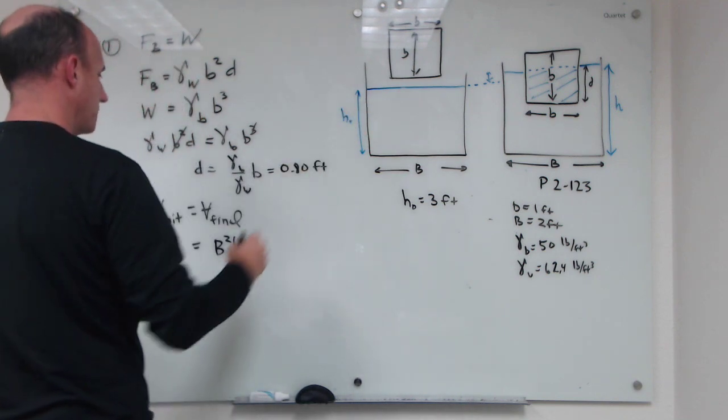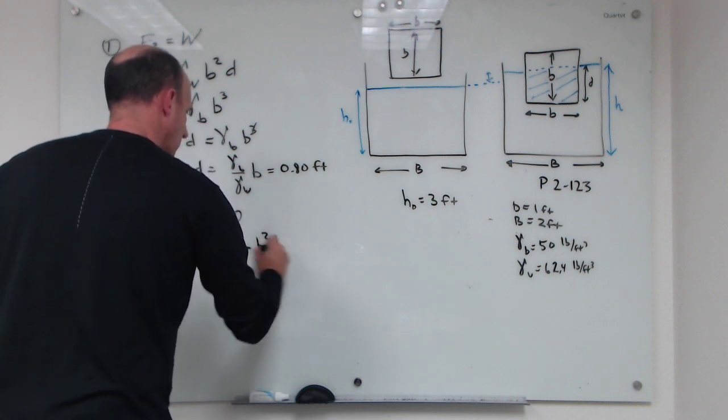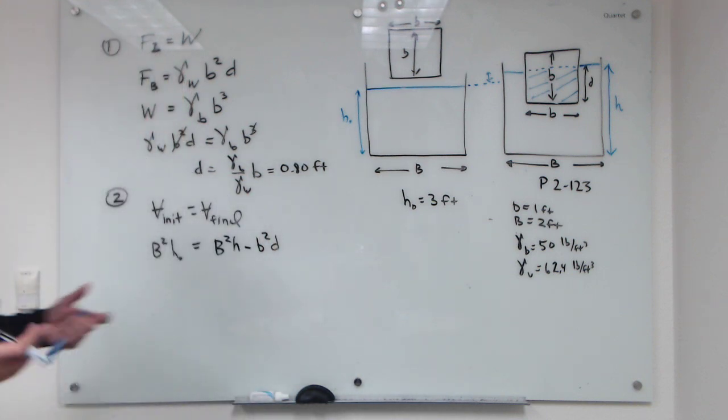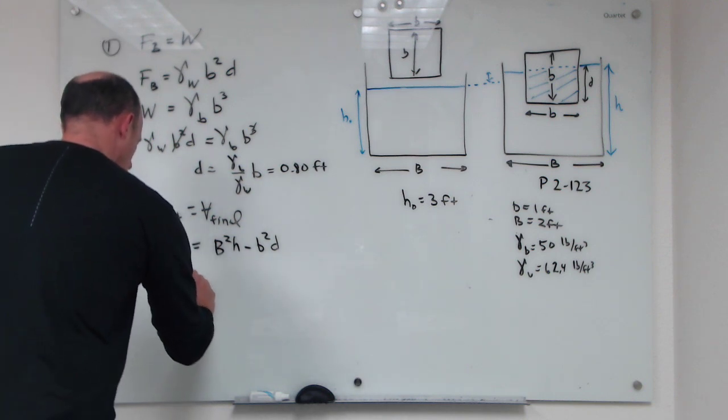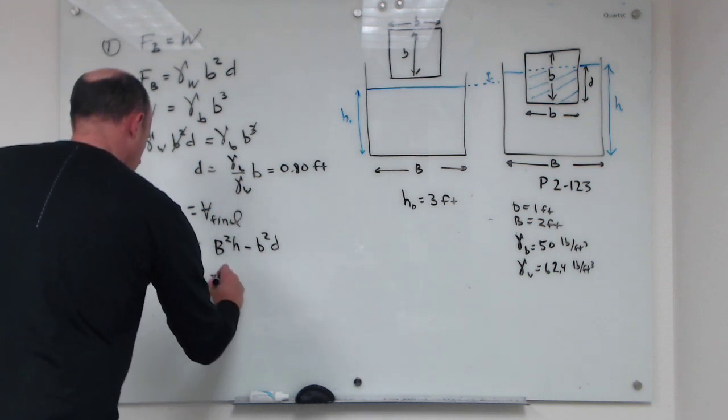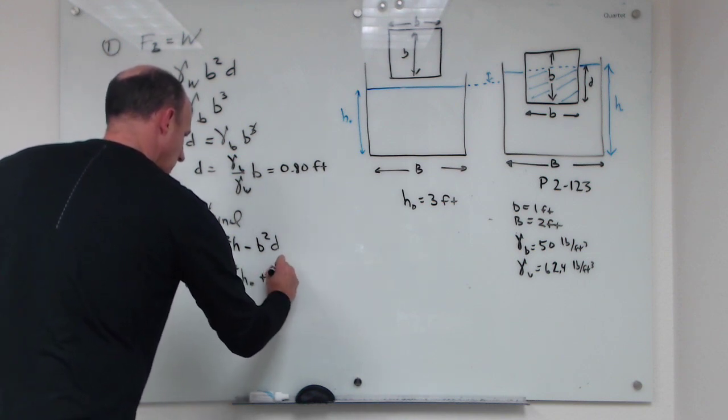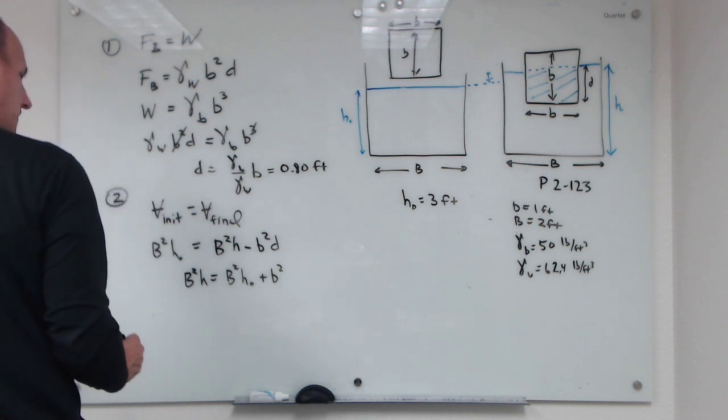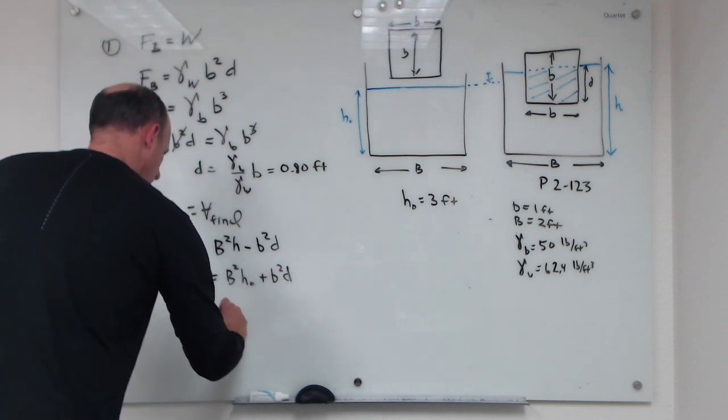So the volume final can be thought of as B squared times H minus the volume that's been displaced, which is going to be equal to B squared times D. Since we want to solve for H, we can say that B squared H is equal to B squared H zero plus B squared D, and so H is going to be...